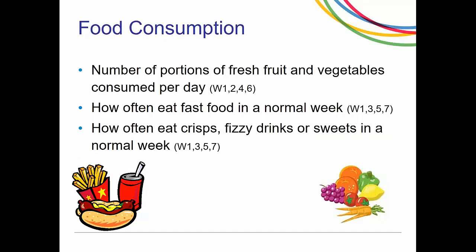The next group of questions asks about food consumption: the number of portions of fruits and vegetables consumed per day, how often they eat fast food, crisps, fizzy drinks, or sweets in a normal week. The fresh fruit and vegetable questions changed pattern — asked in the first wave and then moving to even waves. This could be due to space issues in the questionnaire or to match questions asked of adults, so you can look at consumption within families or as they get older and turn 16 to 21.